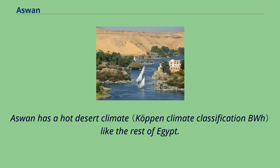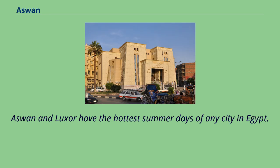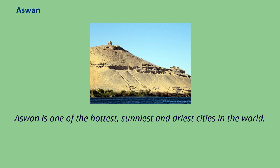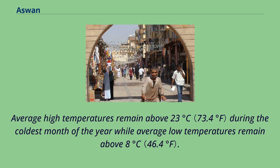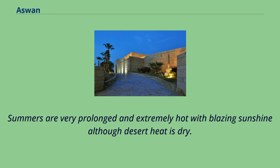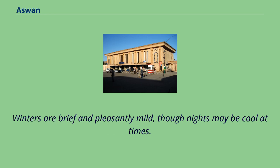Aswan has a hot desert climate like the rest of Egypt. Aswan and Luxor have the hottest summer days of any city in Egypt. Aswan is one of the hottest, sunniest, and driest cities in the world. Average high temperatures are consistently above 40 degrees Celsius during summer, while average low temperatures remain above 25 degrees Celsius. Average high temperatures remain above 23 degrees Celsius during the coldest month, while average lows remain above 8 degrees Celsius. Summers are very prolonged and extremely hot with blazing sunshine, although the desert heat is dry. Winters are brief and pleasantly mild, though nights may be cool at times.